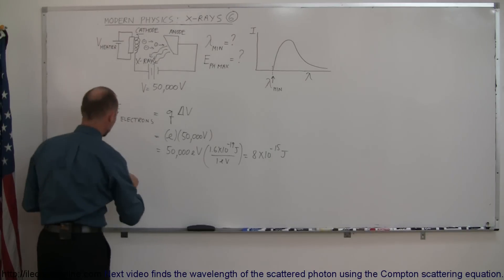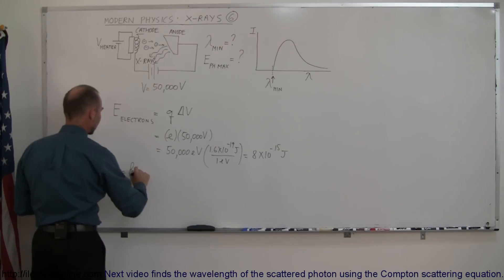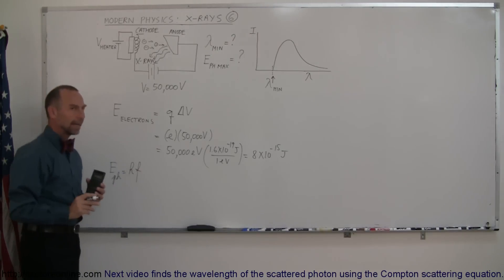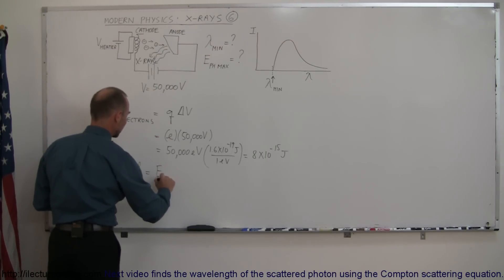We can then find out the energy of the photon. So energy of the photon is of course equal to Planck's constant times the frequency. And of course that would then be equal to the maximum energy of the electrons.